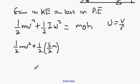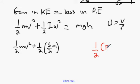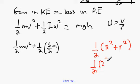The inertia value comes from question 8 which we did previously. The formula is I = (M/2)(R² + r²). So: half × (2² + 1²) = half × 5 = 5/2. That gives us the 5/2 M we're using.